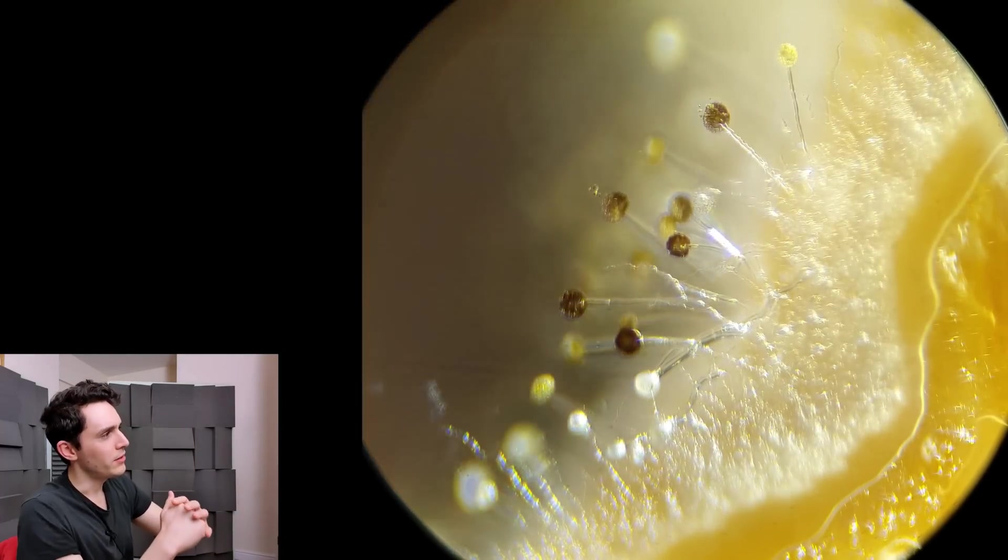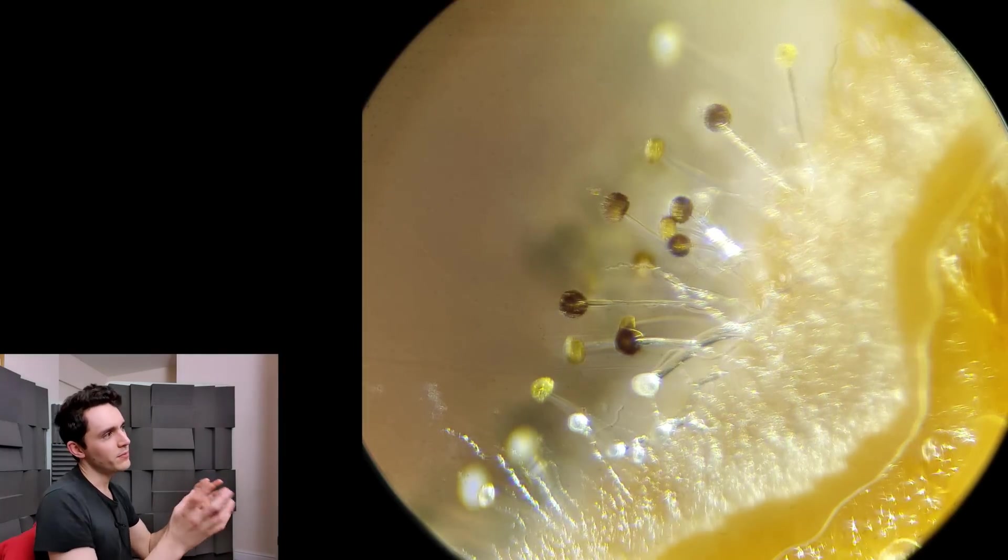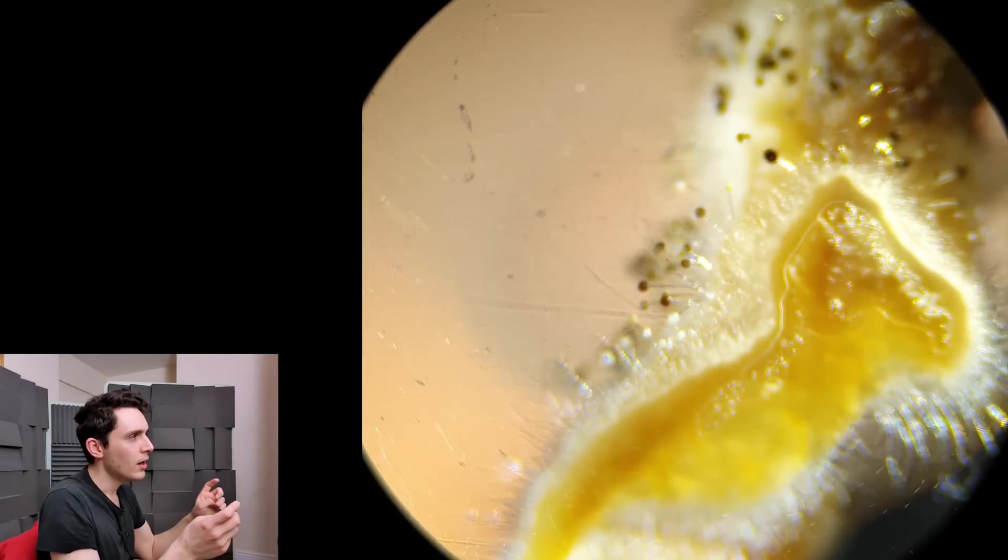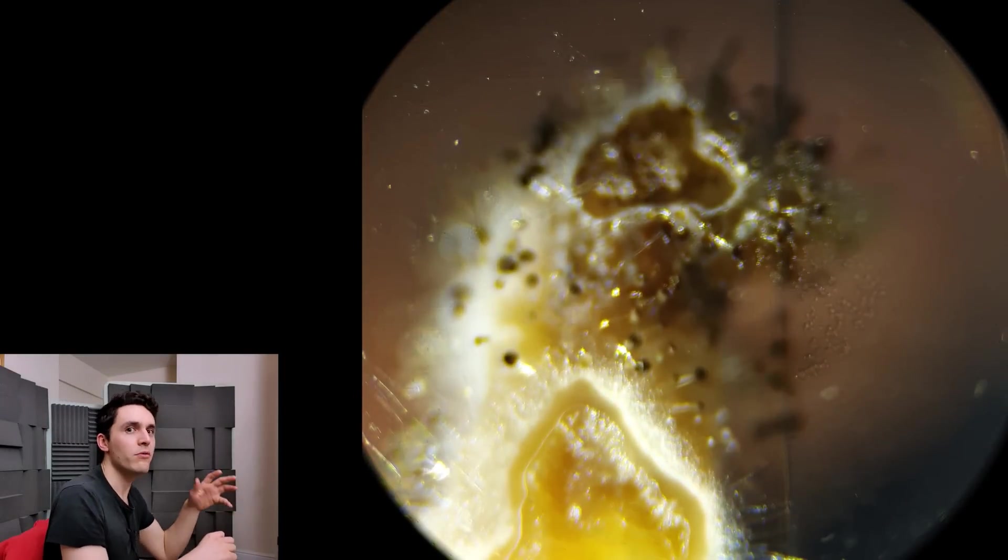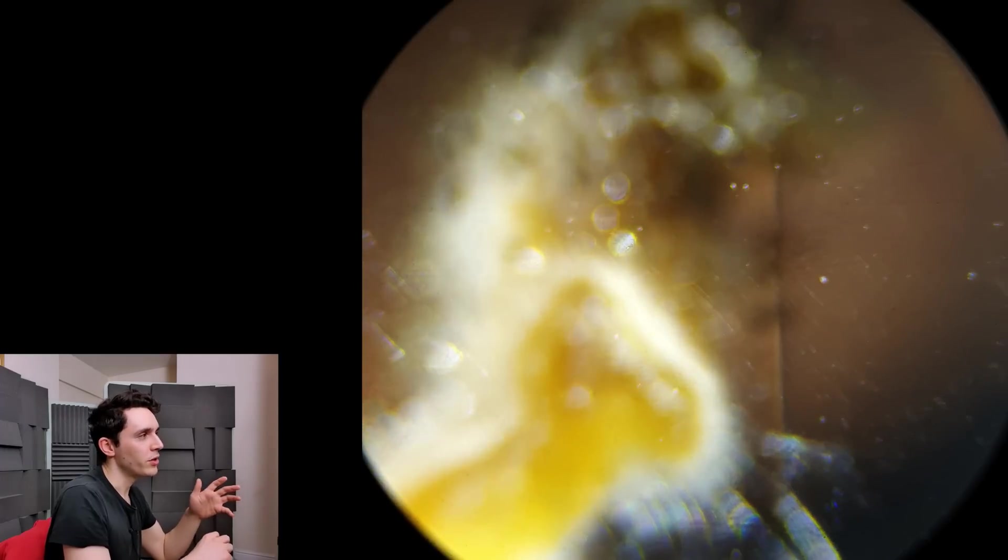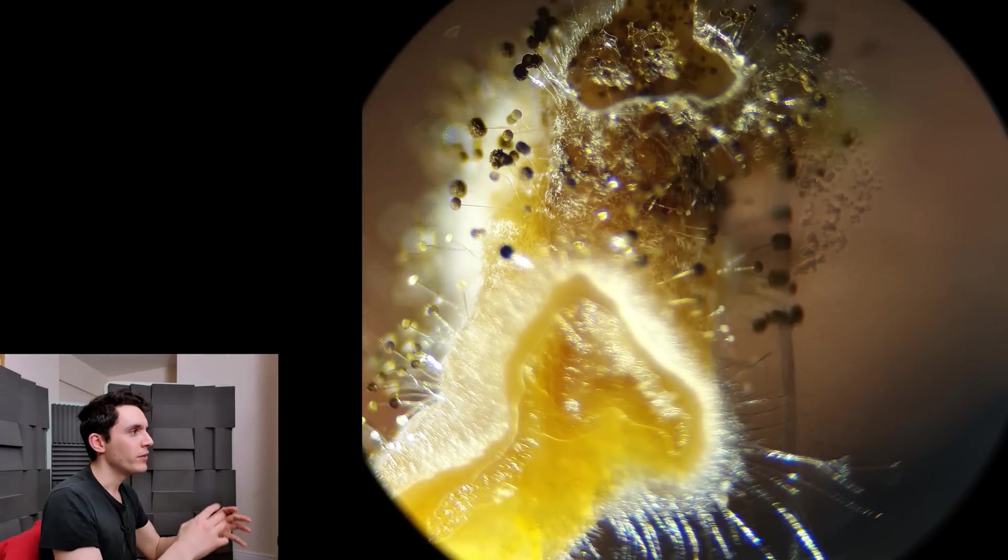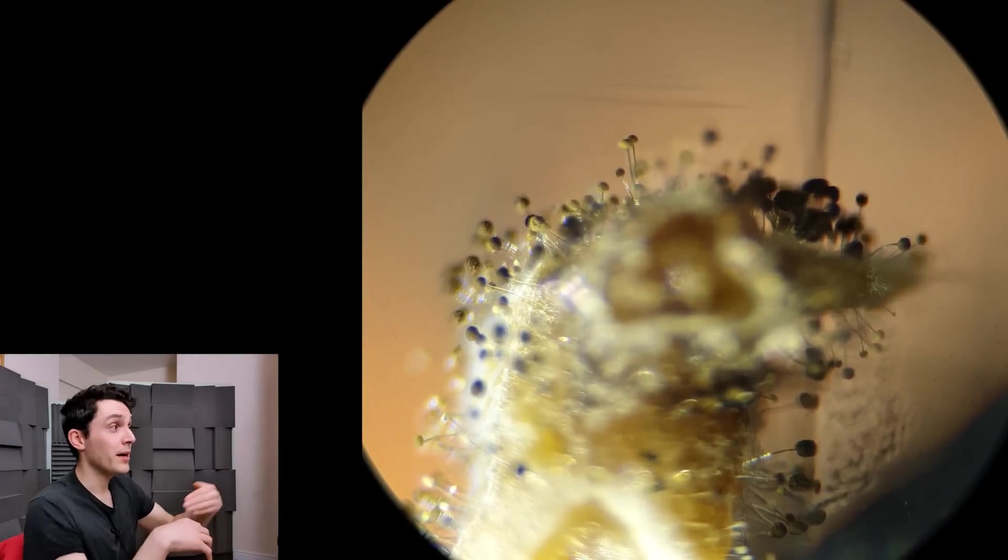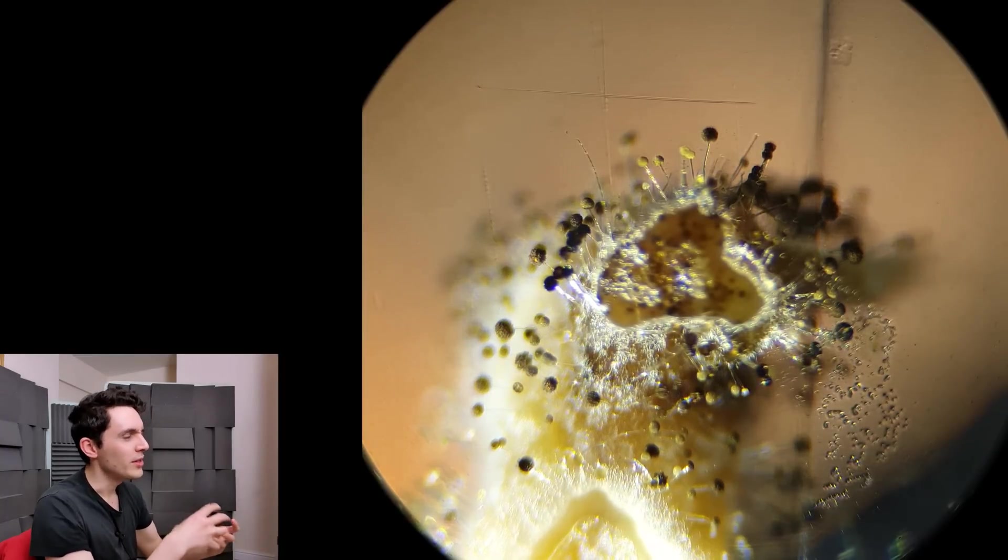You can see here some immature conidiophores. You're probably thinking at this point that some of these conidiophores have a brown appearance. The mature ones definitely look dark and black, but some look brown. What you have to remember is that we're shining a very powerful light on this sample. When you get to these high levels of magnification, you need more light, and that obviously distorts the image a little bit. The higher the magnification, the more garbagey the image looks.